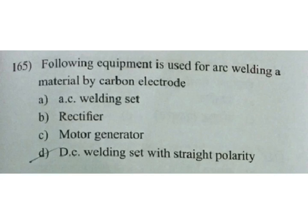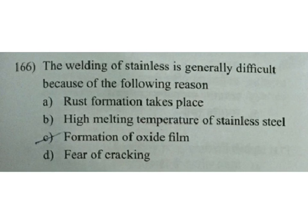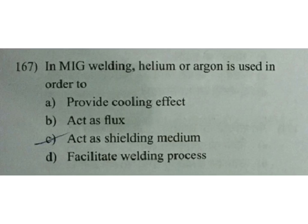The welding of stainless steel is generally difficult because of: A rust formation takes place, B high melting temperature, C formation of oxide film, D fear of cracking. Formation of oxide film is the answer. In MIG welding (metal inert gas welding), helium or argon is used in order to: A provide cooling effect, B act as flux, C act as shielding medium, D facilitate welding process. Shielding medium — for MIG welding, helium or argon gas is used for shielding.